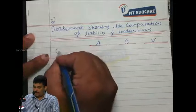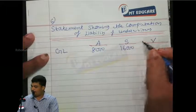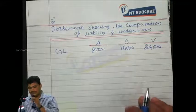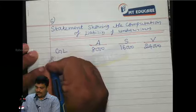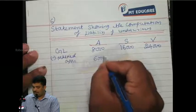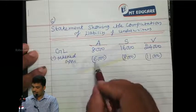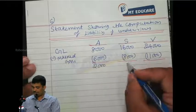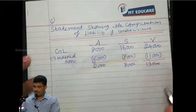So gross liability: 8,000, 16,000, 24,000. Minus marked applications: 6,000, 8,000, and 11,000. We get 2,000, 8,000.